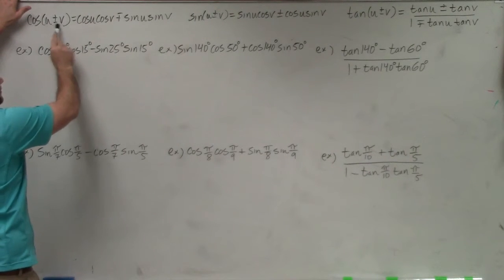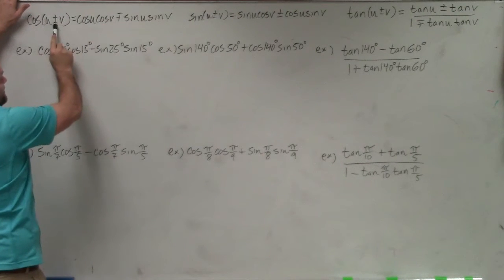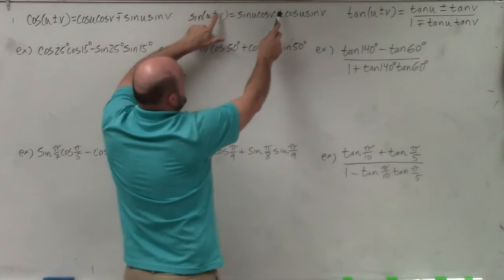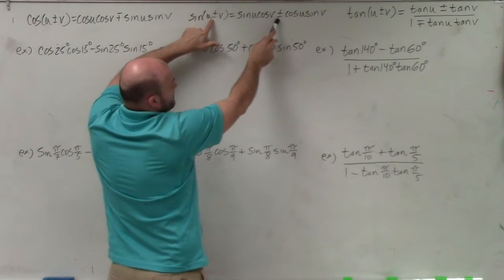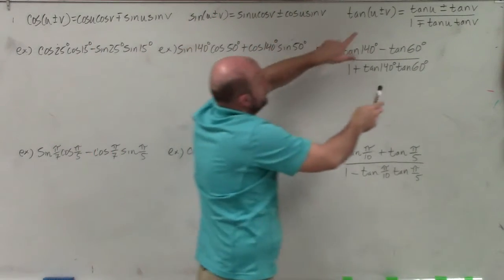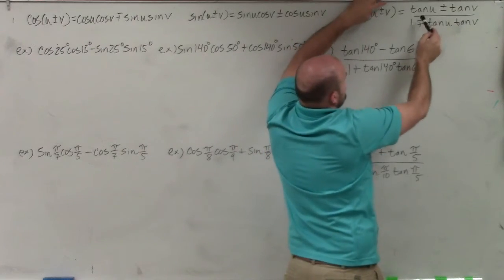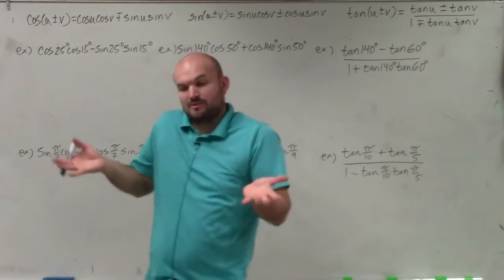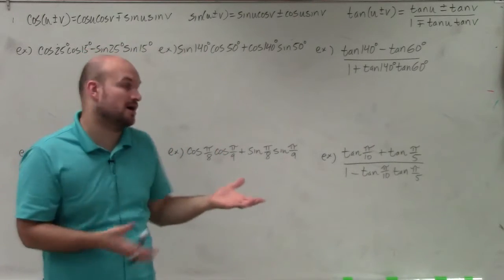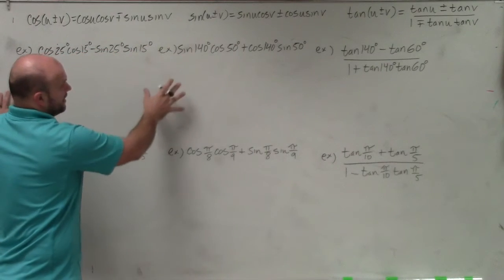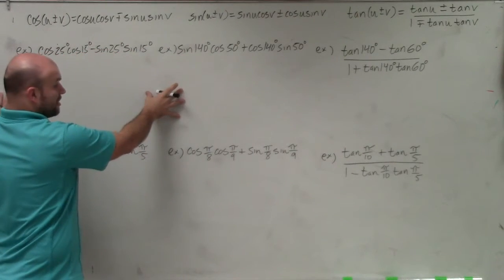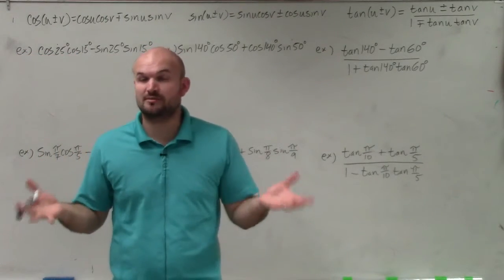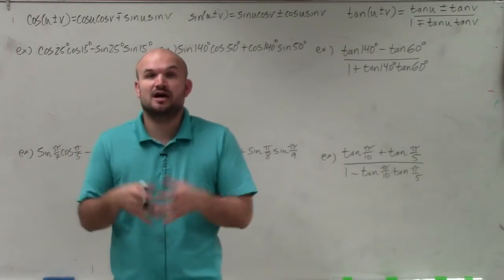So if it's the sum of two angles, then it's minus in between for cosine. And if it's the difference of two angles, then it's the plus. For sine, the plus and plus correspond and the minus and minus correspond. Basically what we're doing is applying these sum or difference formulas to an expression and rewriting it as one single trigonometric expression of an angle.